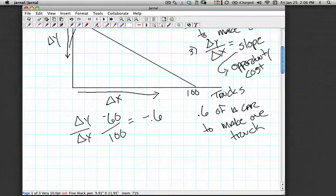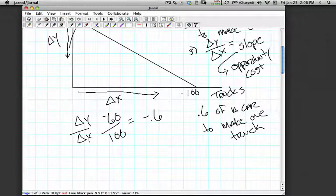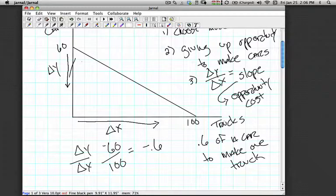So we can see that the rate of trade-off, how we have to trade off cars for trucks, is going to be defined simply by the slope of this production possibility frontier, the rate at which y changes with a corresponding change in x, or the rate at which x must change for a corresponding change in y. Slope of the line if we're looking at additional production along the x-axis, inverse of the slope if we're looking at additional production along the y-axis.